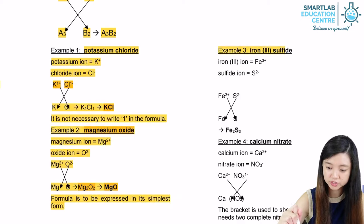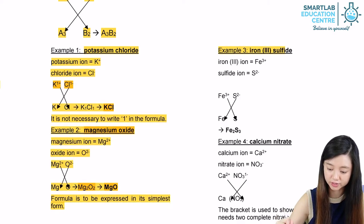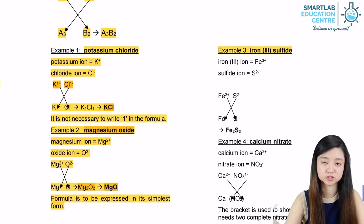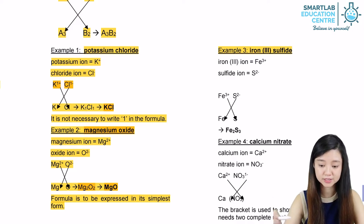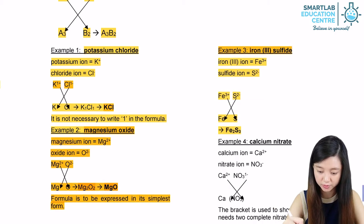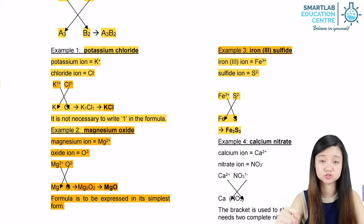For example 3, we have iron(III) sulfide. Iron(III) is a 3 plus charge, so Fe³⁺. Sulfide has a 2 minus charge, so S²⁻. After you crisscross, you should be able to get Fe₂S₃.